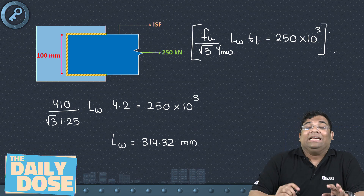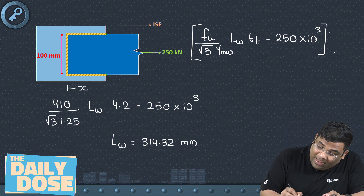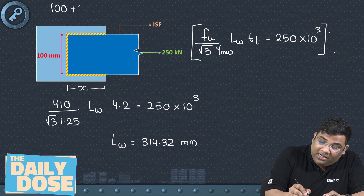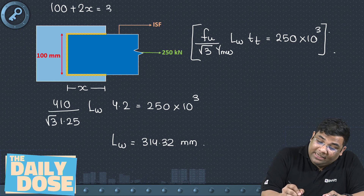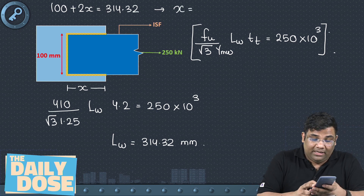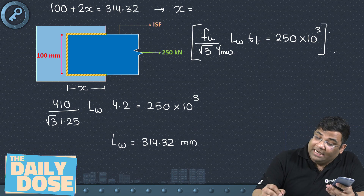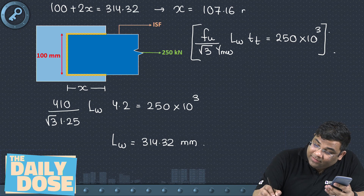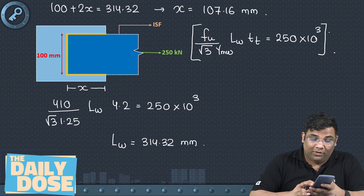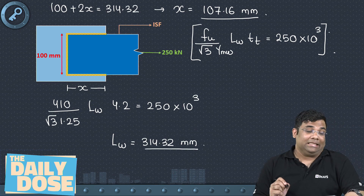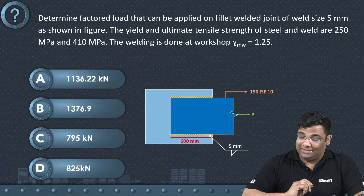So the total length of weld is 314.32 mm. Since the total weld length equals 100 + 2x, we get 100 + 2x = 314.32, so x = (314.32 − 100) / 2 = 107.16 mm. Verification: 2 × 107.16 + 100 = 314.32 mm. This is the overlap length of the two plates.